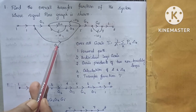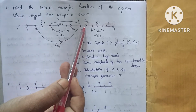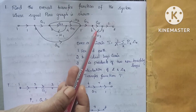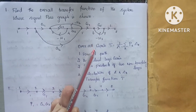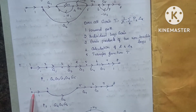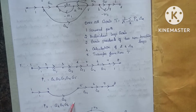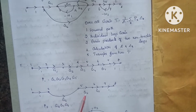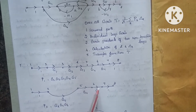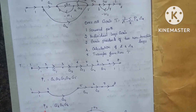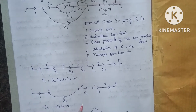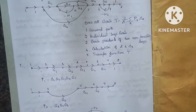Then we calculate the second forward path using G6, G4, and G5.